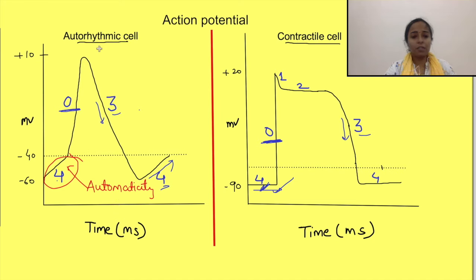Now this action potential is not having numbers 1 and 2, since both these phases of contractile cell action potentials are lacking in this action potential. You see, directly 3 is coming. Now let us see in detail the generation of SA node action potential—this is what this video is about.